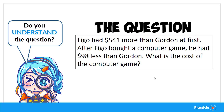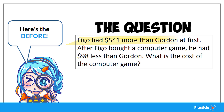Let's practice identifying the before situation, the change, and the after situation. I want all of you to think about this for a few seconds. Are you ready for the answer? Figo had $541 more than Gordon at first — so this is what we have at the start, and this is the before situation that we are looking for.